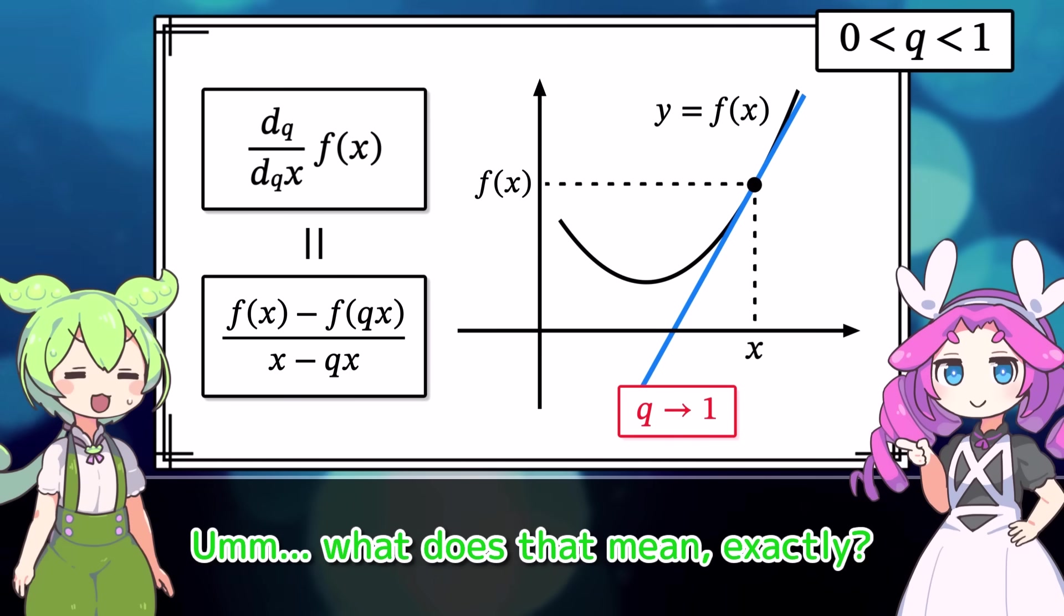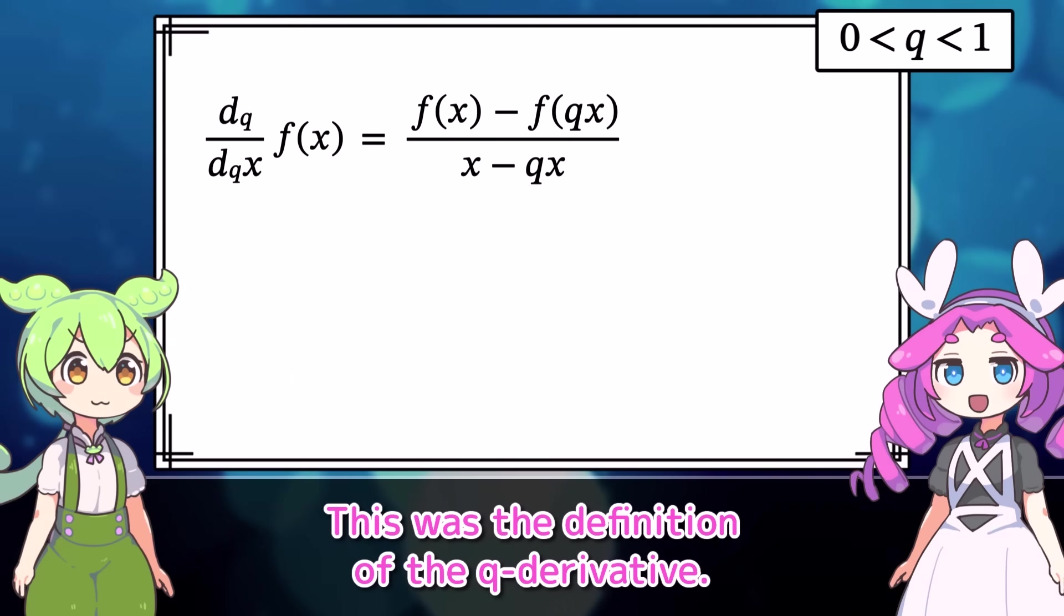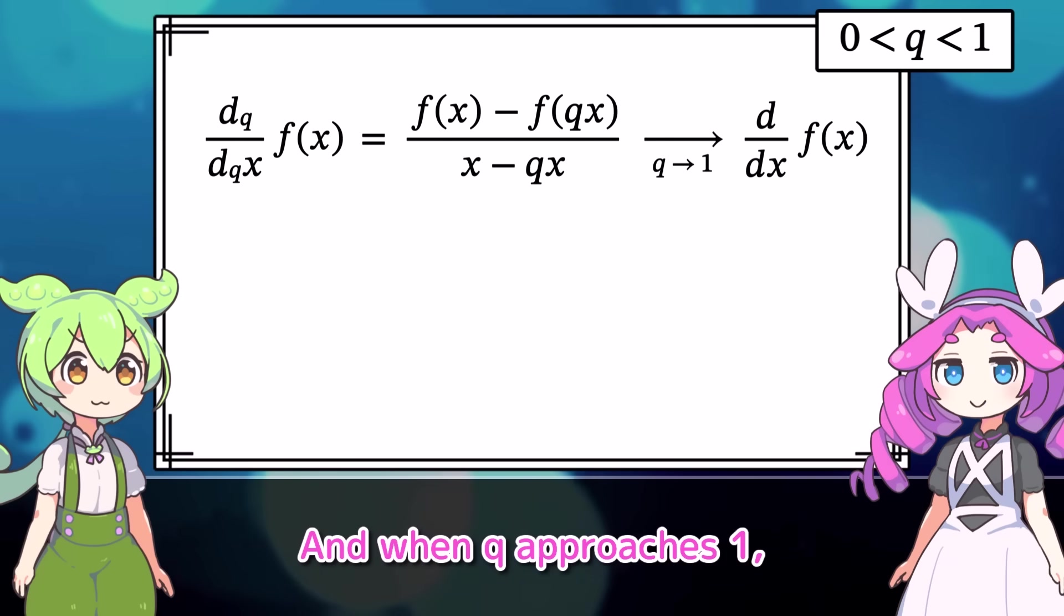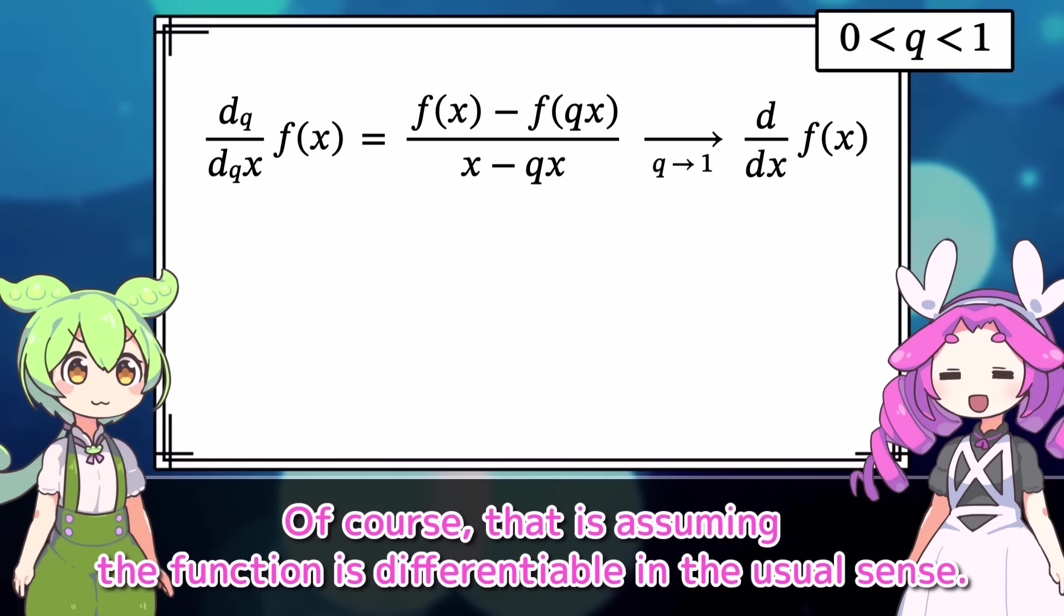In other words, the q-derivative converges to the usual derivative. What does that mean exactly? Let's organize our thoughts a bit. This was the definition of the q-derivative. It represents the average rate of change between two points.